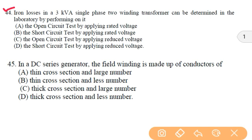In the next question, iron losses in a 3 kVA single phase two winding transformer can be determined in the laboratory by performing on it. So we can find the losses such as iron losses, copper losses by performing open circuit and short circuit on the single phase transformer. For iron losses we'll perform the open circuit test with rated voltage. For copper losses, we will short circuit by applying a reduced voltage. But here in this question, option A will be the correct answer, that is open circuit test with rated voltage.